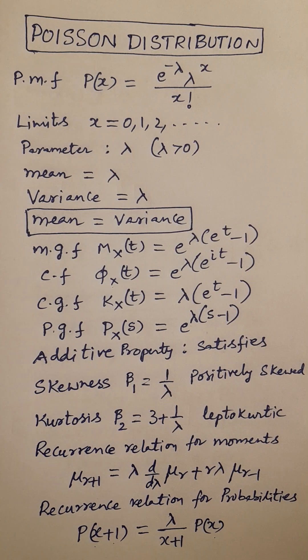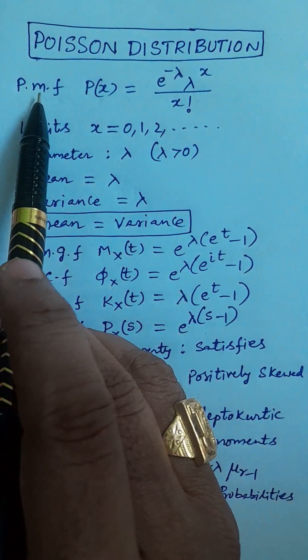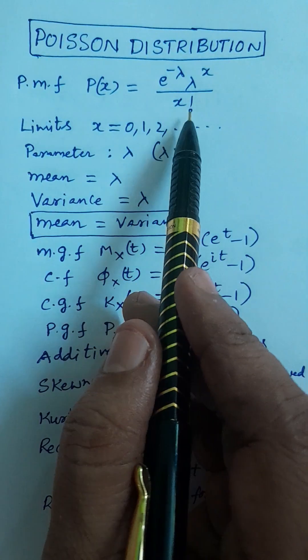Shri Guru Phyonamaha. Statistics students, I will briefly explain the Poisson distribution. The probability mass function P of X is equal to E power minus lambda, lambda power X by X factorial.